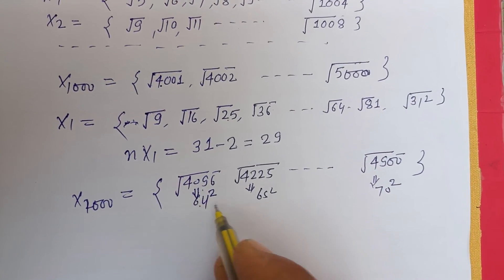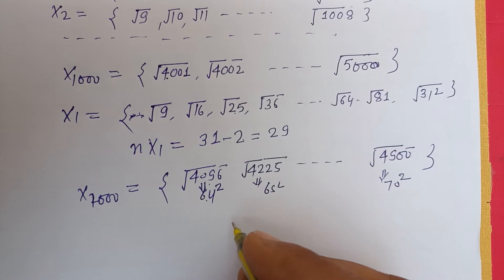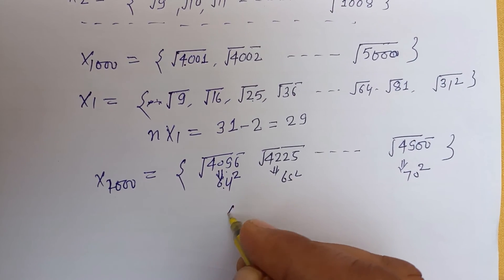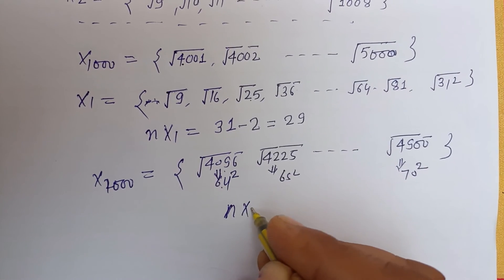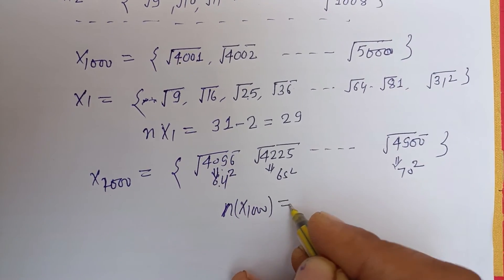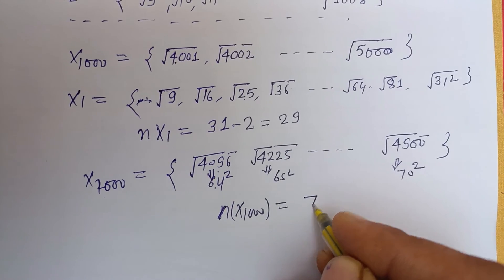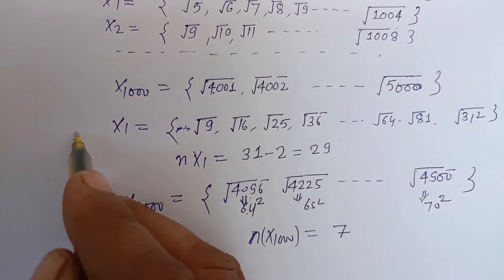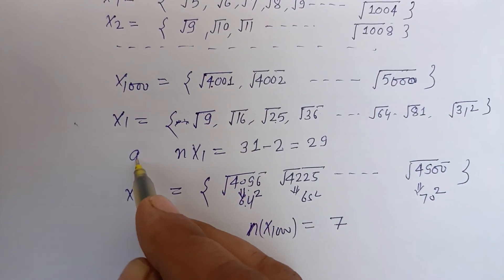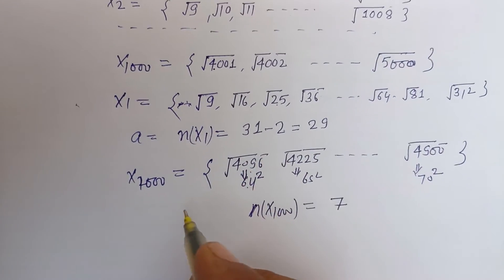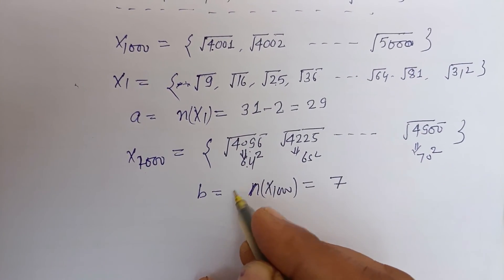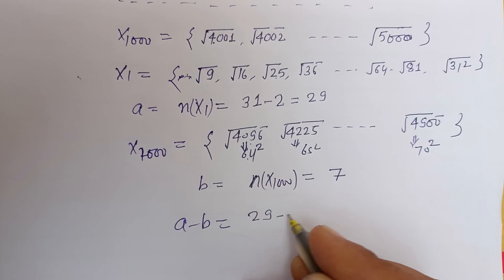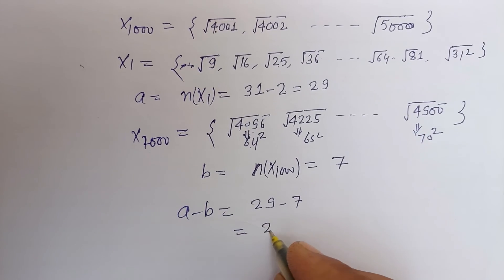So from 64 to 70, these are seven numbers. So n(X1000) is 7 here. And the question is saying that this is a and this is b, so a minus b will be 29 minus 7, which is 22.